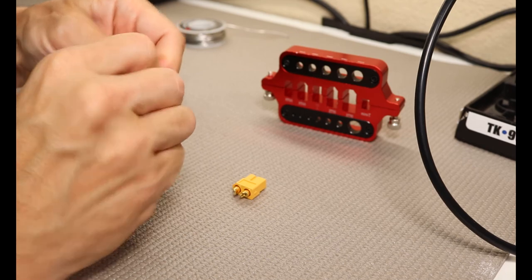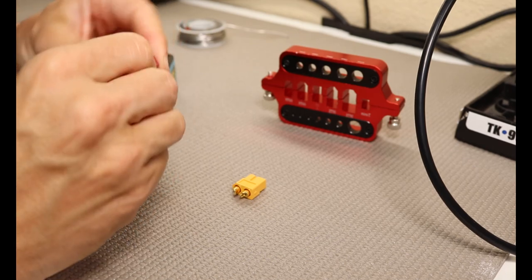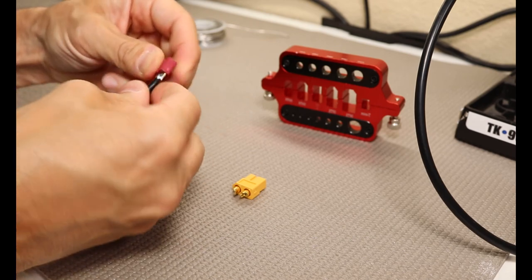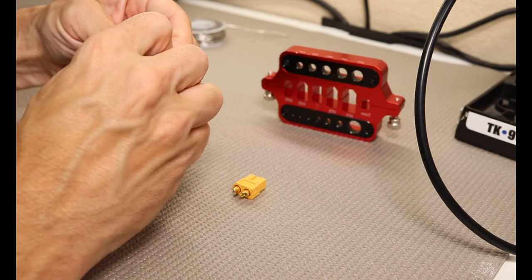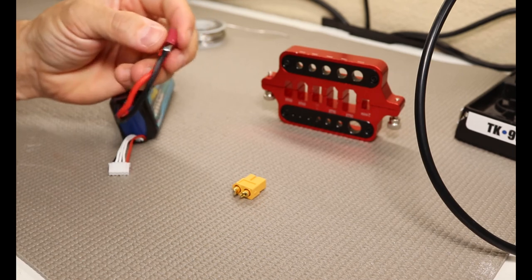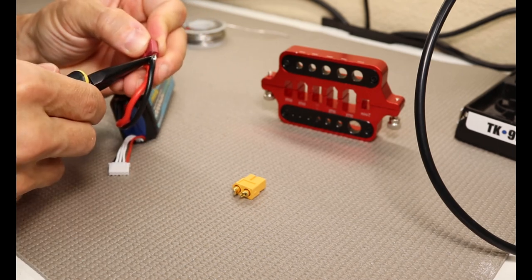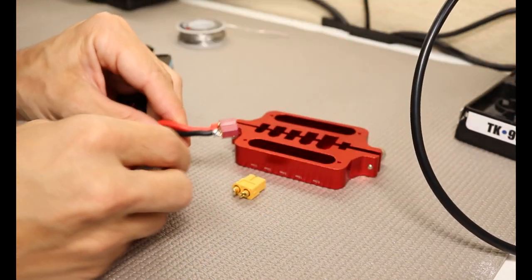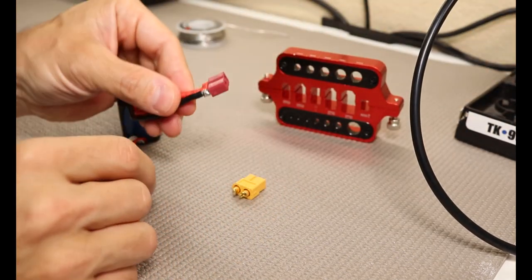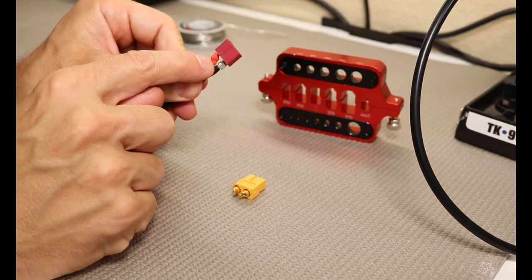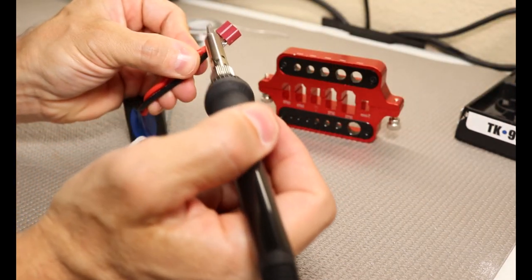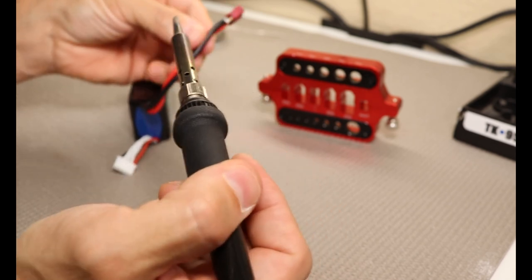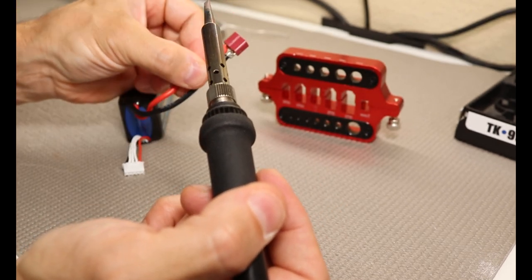And a first tip for you guys is to not remove the shrink tubing off of both connectors. One of the main things that you always want to pay attention to when you're soldering connectors is that you don't short out your battery at any point in time. So especially on Dean's connectors, since the terminals are so close to each other, it's very easy for the soldering iron to move over while you're working on it. And if you touch both, then obviously you're going to have a short situation.